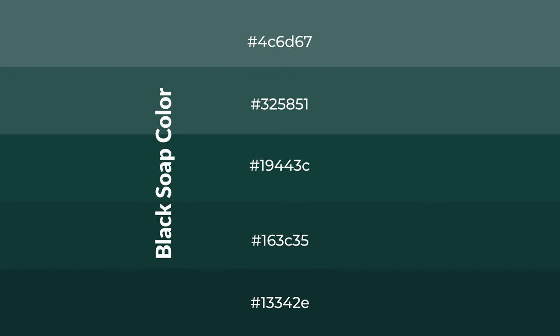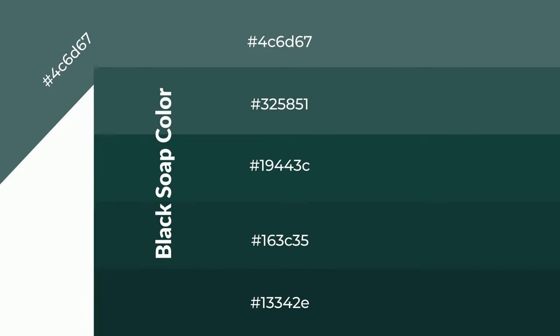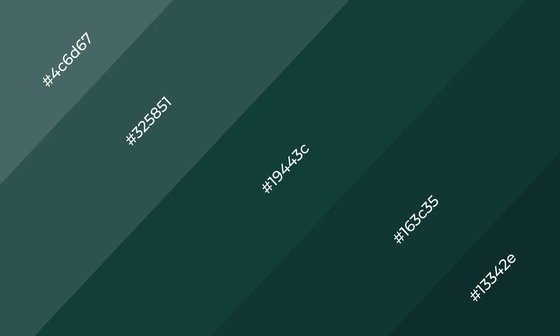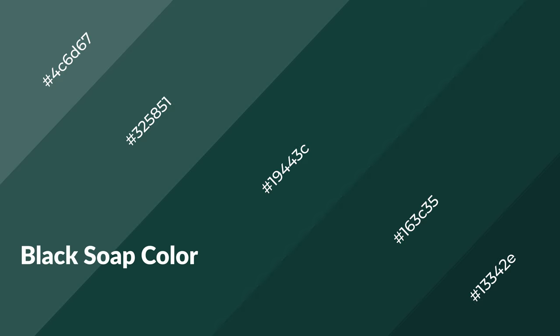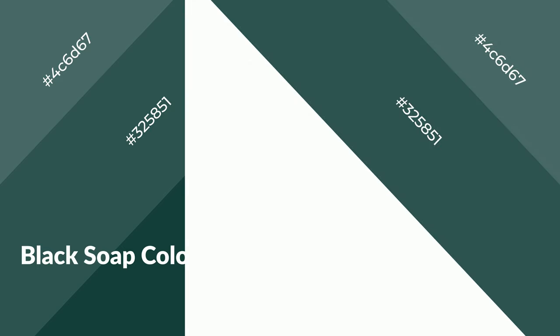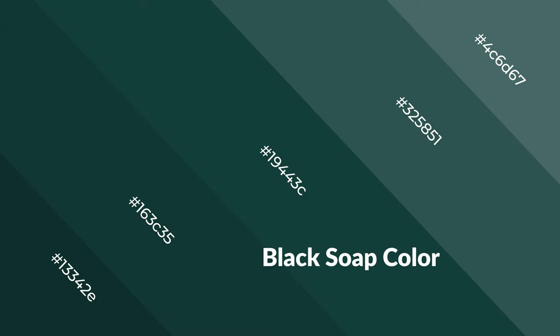To generate shades of a color, we add black to the color. Shades are used in patterns, 3D effects, and layers, and create depth and drama. Black soap is a cool color and it emits calming, serene, soothing, refreshing, spacious, unwinding, peaceful, and relaxed emotions.